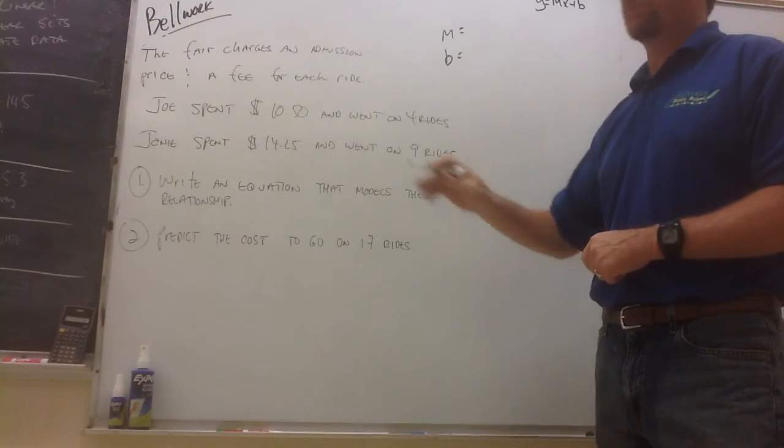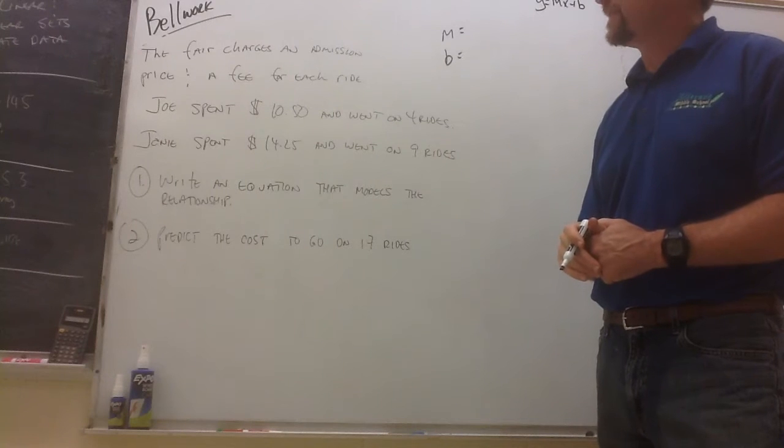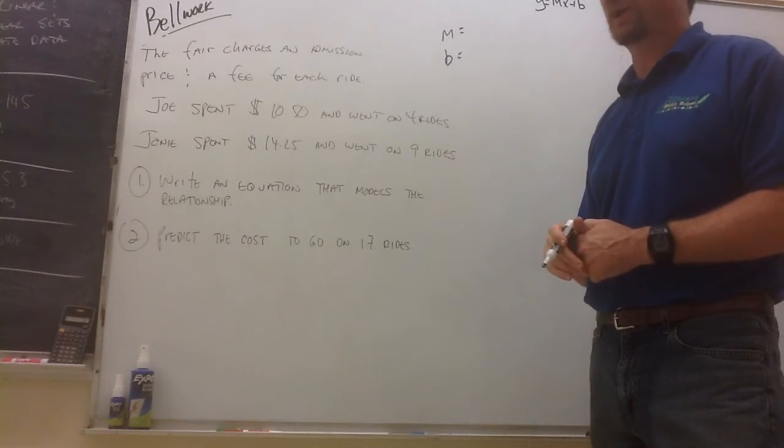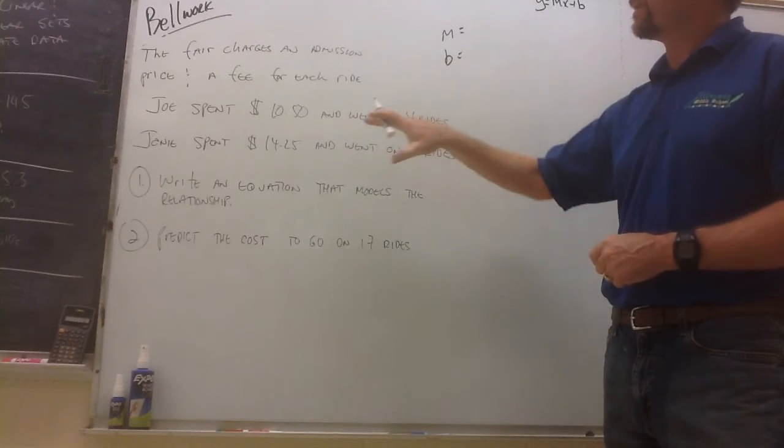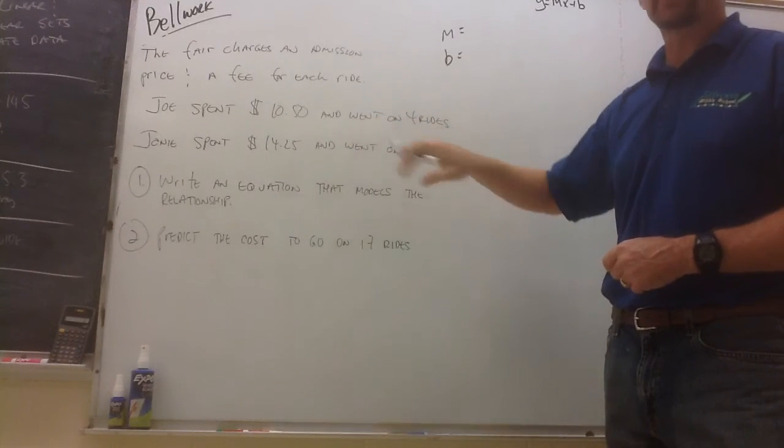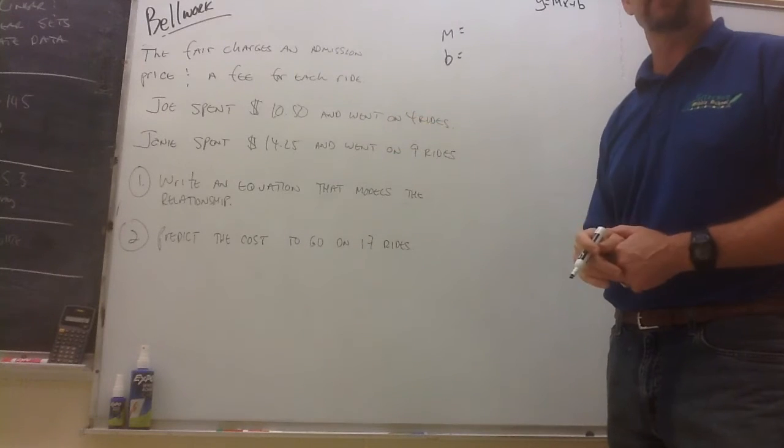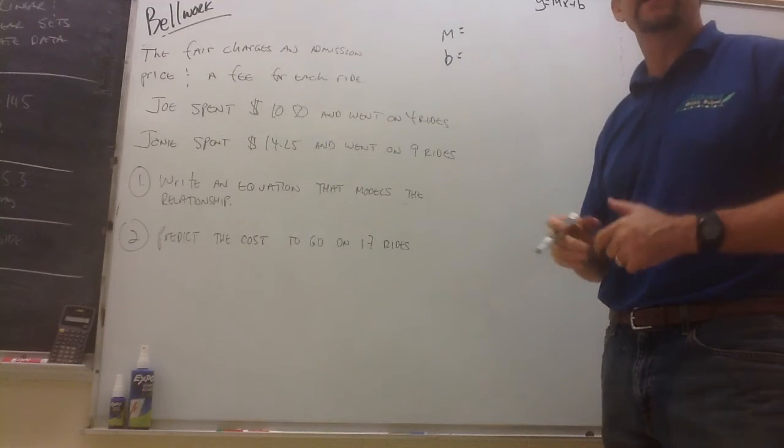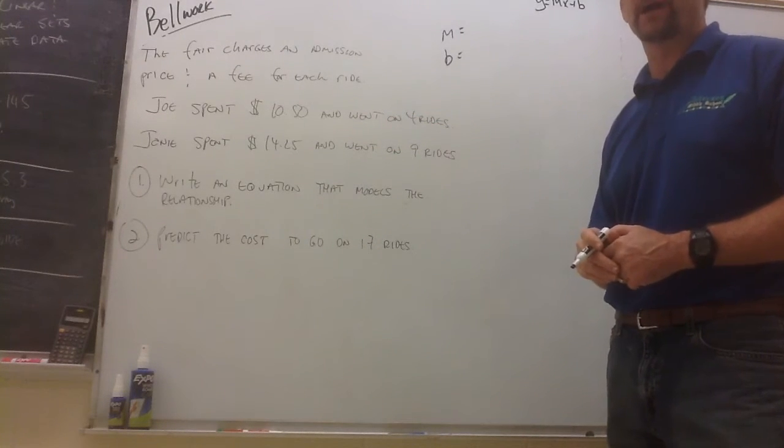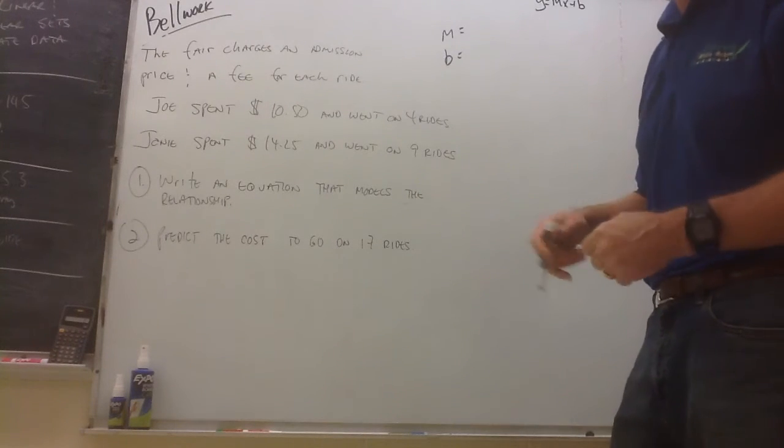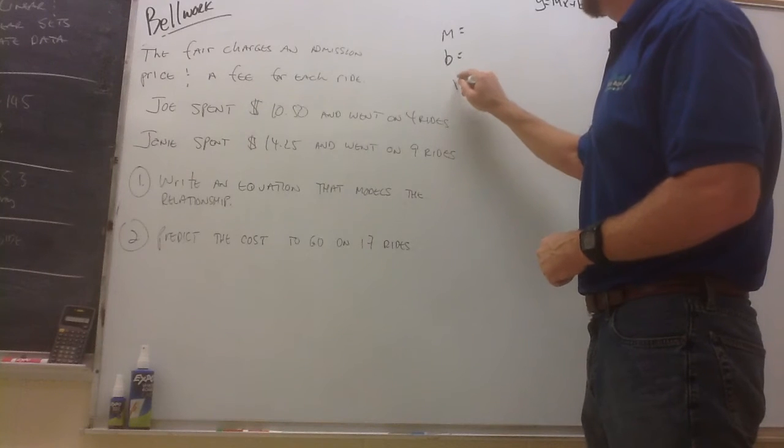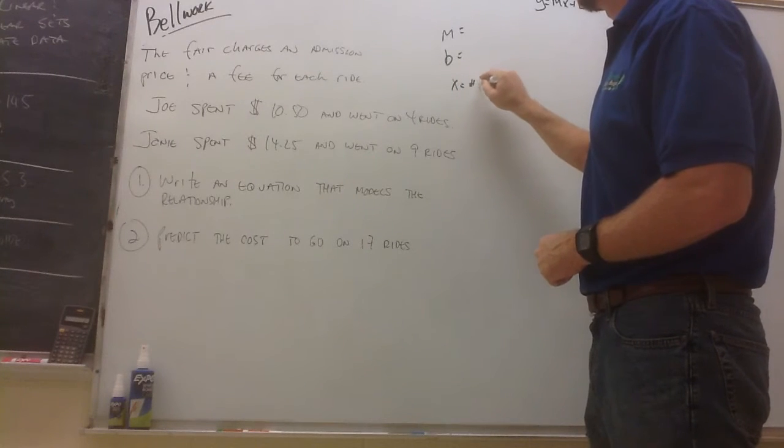And if we're going to do that, we need to figure out which one of these, what should our x and our y represent in this scenario? Well, if you think about it, how much does it cost for these guys to go to the fair? Well, that depends on the number of rides that they go on. So the number of rides is going to be your input or your independent variable or your x. Let x be the number of rides.